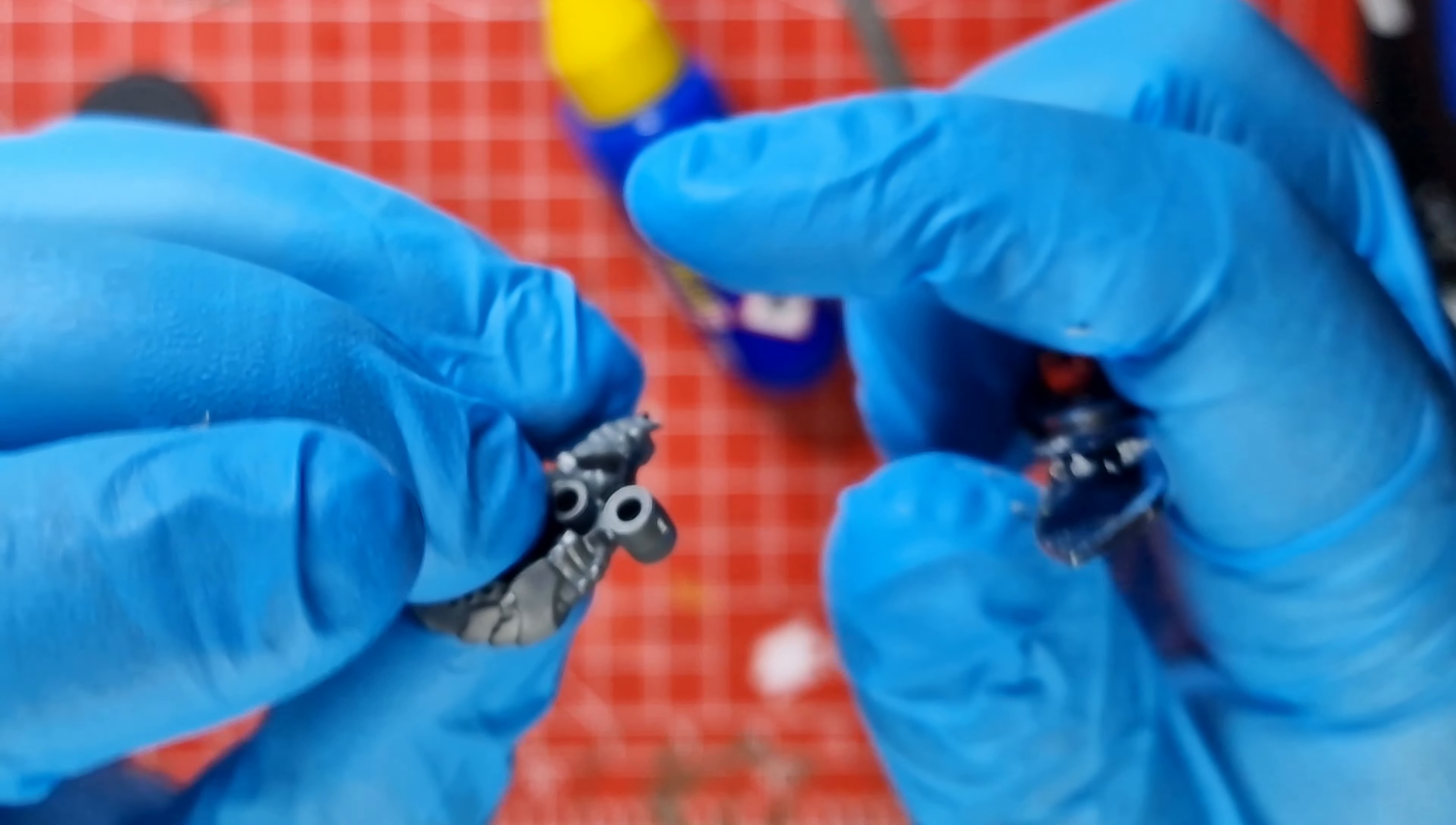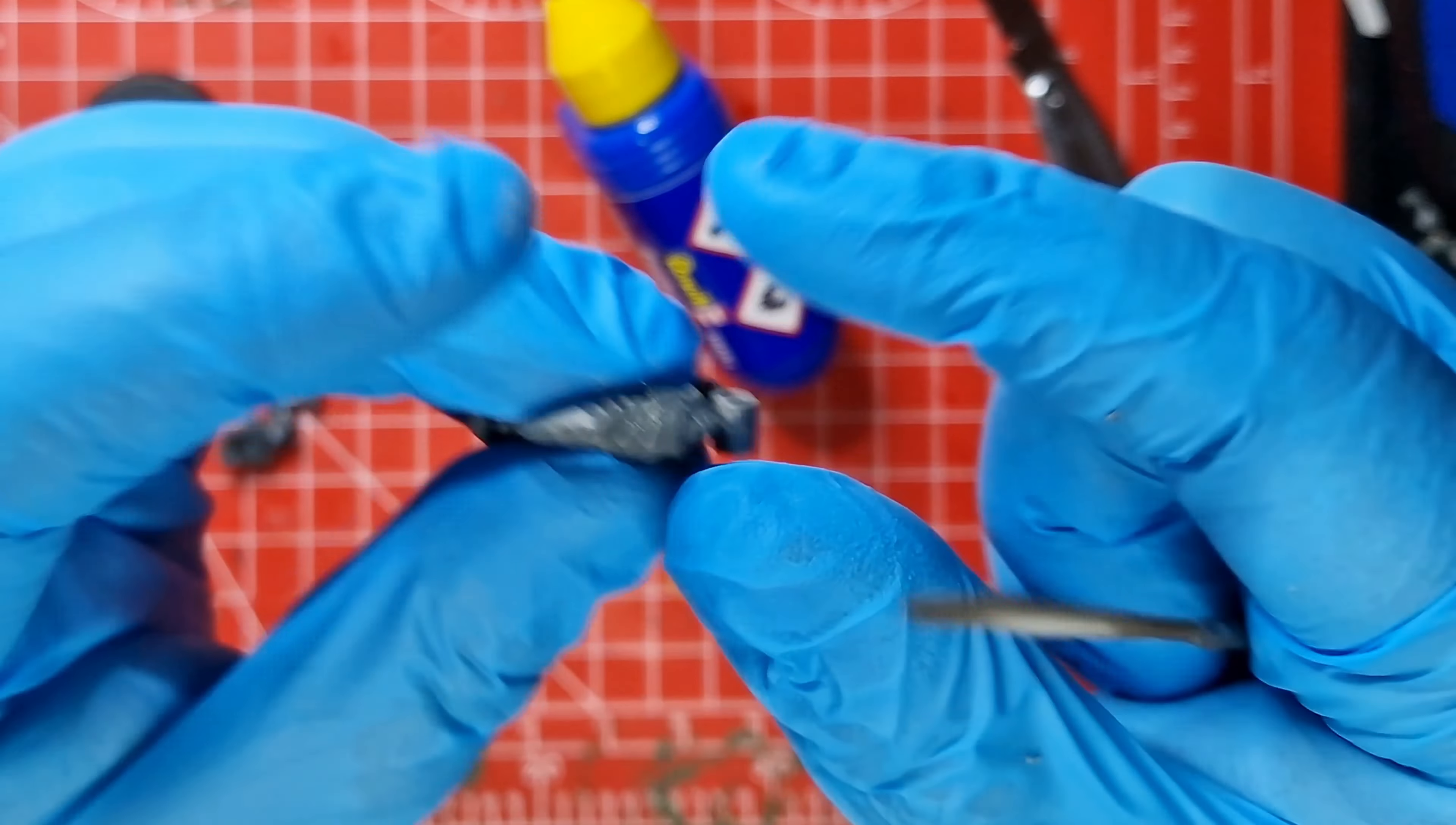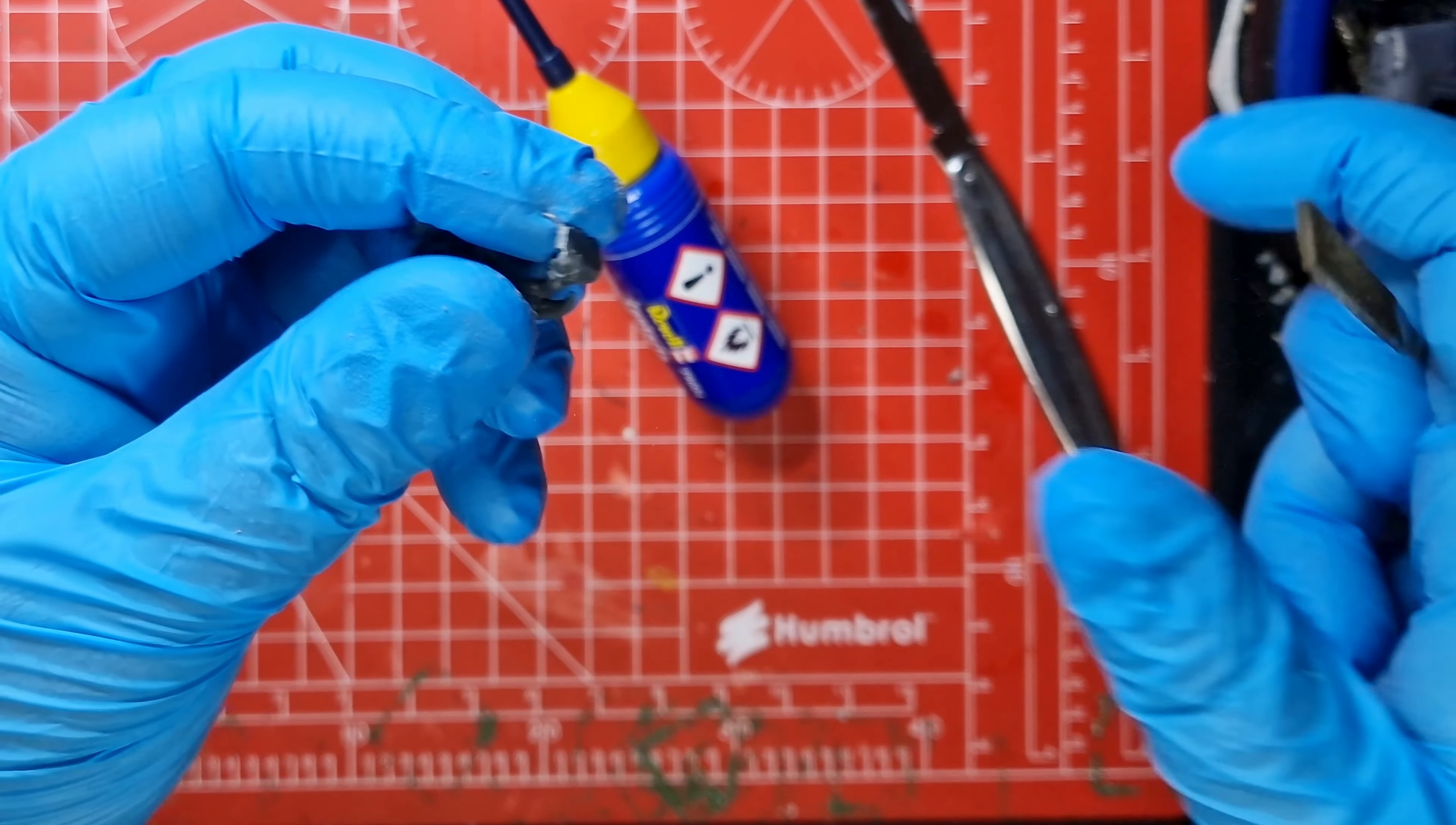So once you've cleaned everything up, if you've still got a bit of sort of layering edges or some uneven lines, you can use a file just to file that away as well. Just makes it nice and flat and nice and smooth. Okay, so the model, all the edges are starting to get nice and smooth and ready for me to put together.